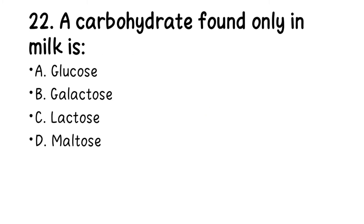Number 22. A carbohydrate found only in milk is: A. Glucose, B. Lactose, C. Lactose, D. Maltose. This is a very popular question — sometimes they ask 'what is the milk sugar?' The right answer is lactose; lactose is the milk sugar.